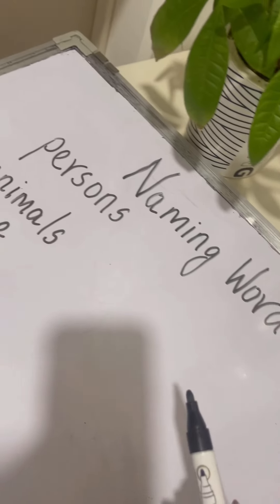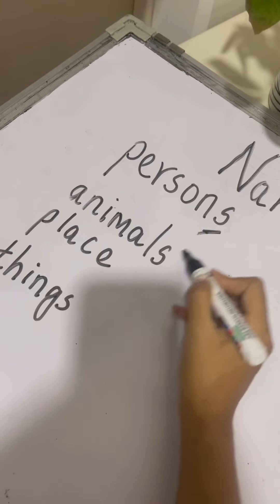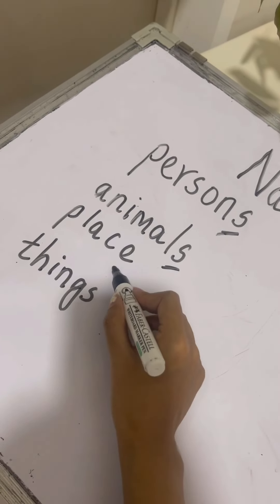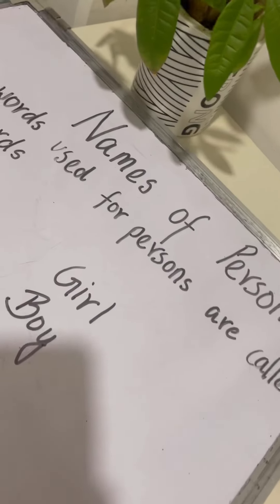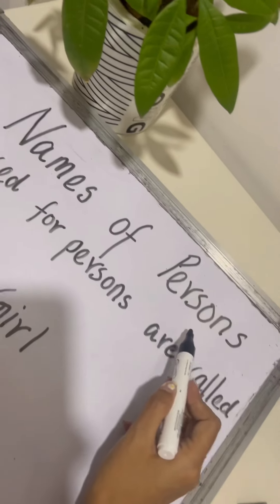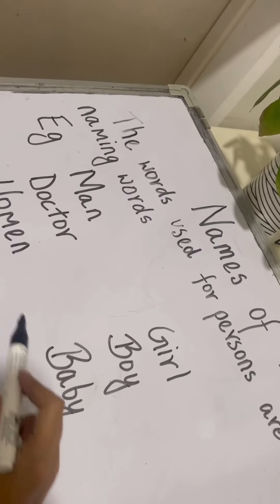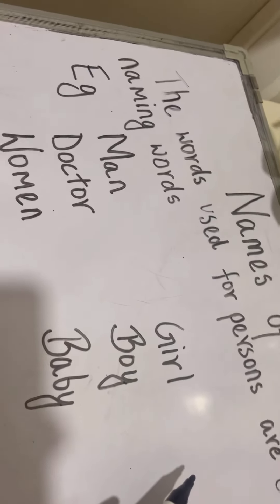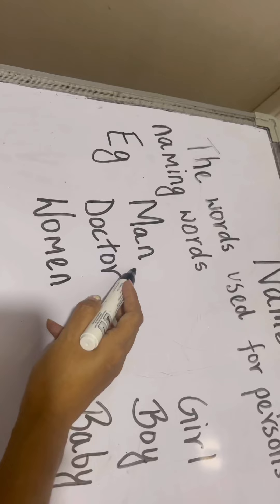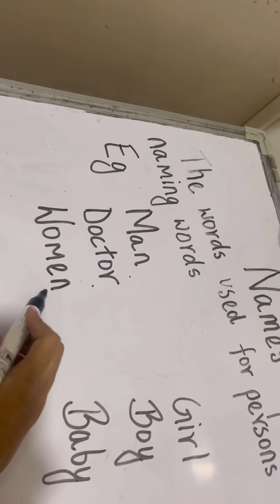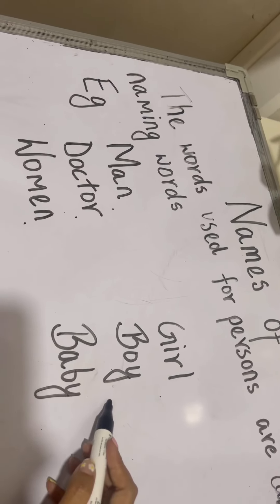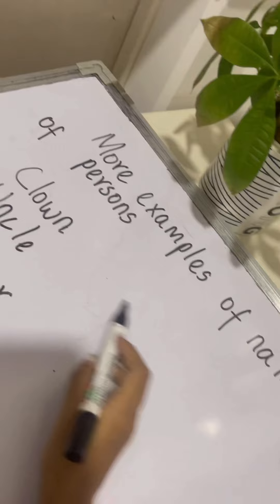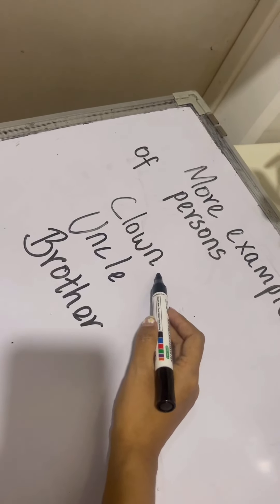Naming words can be the names of persons, animals, places, and things. Now, let us take a look at the names of persons. All these words used for persons are called naming words. Now let us take a look at more examples of names of persons: clown, uncle, brother. These are all names of persons.